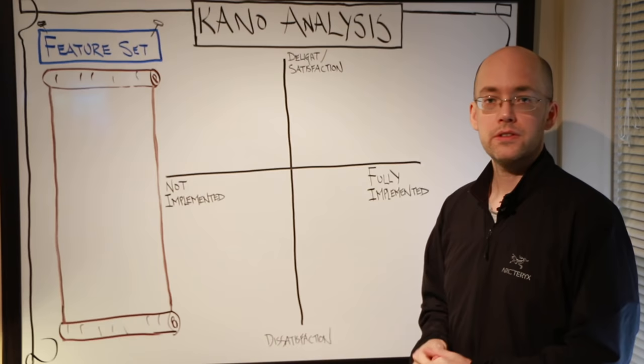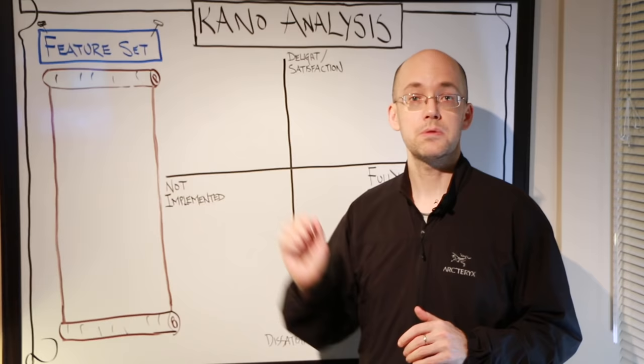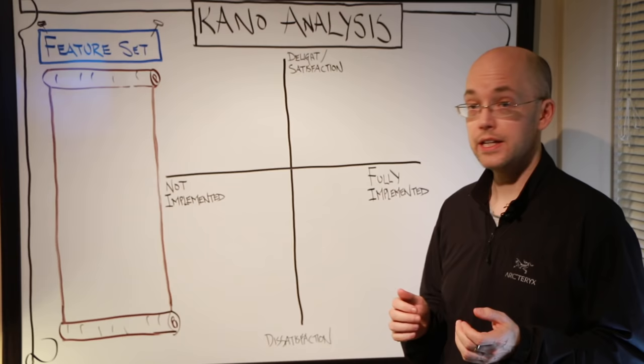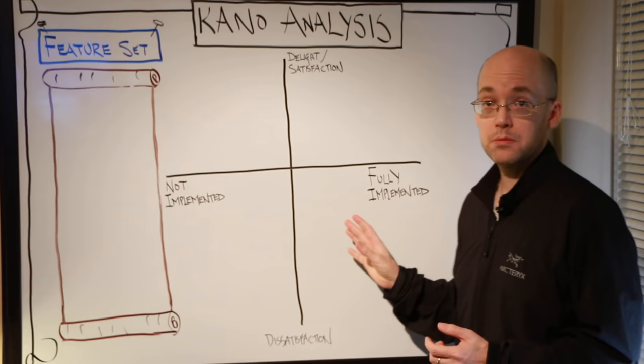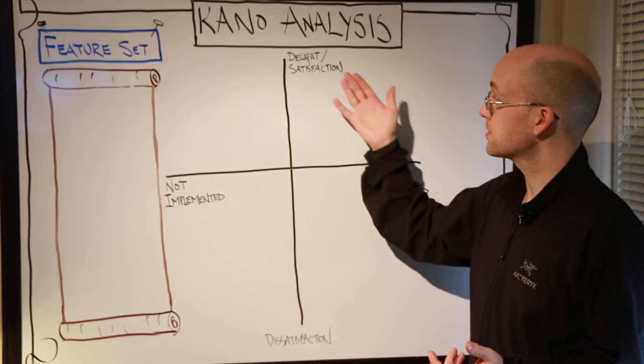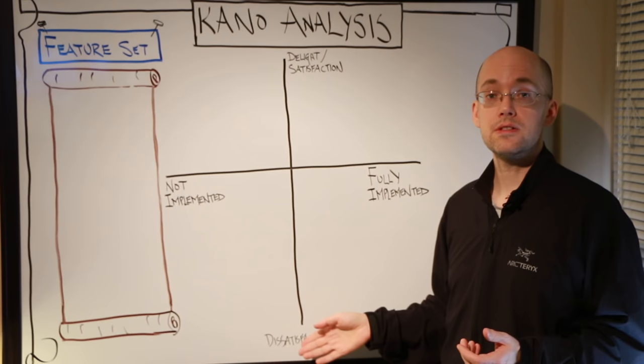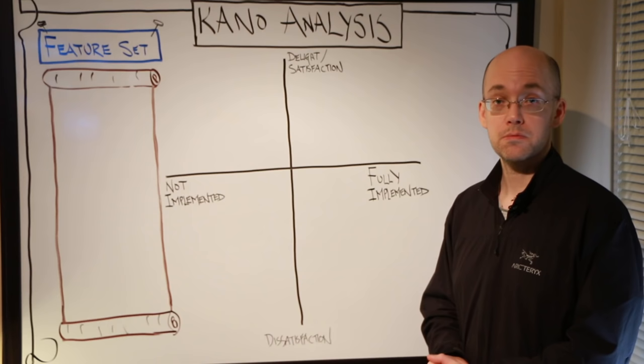So the Kano analysis is to look at product features, and in this example I'll be going through a smartphone example and listing out the product features of the smartphone. What this model helps us to do is to differentiate these product features based on the amount of satisfaction or delight that they'll bring to the customers versus the amount of dissatisfaction if we don't have these features in our product set.